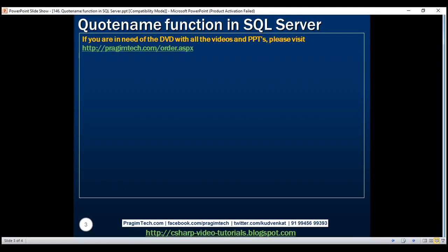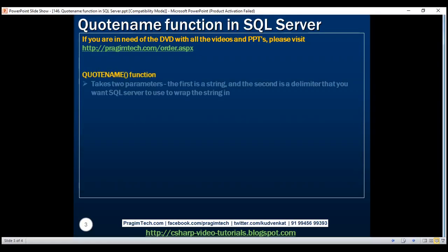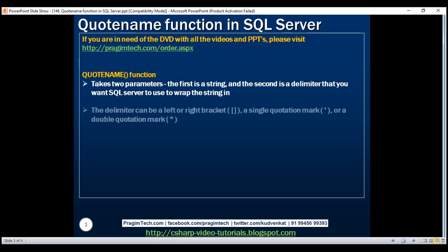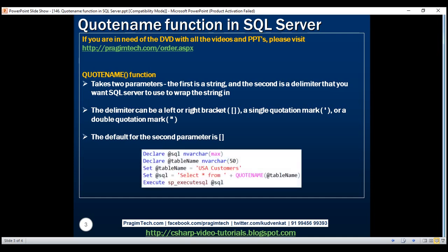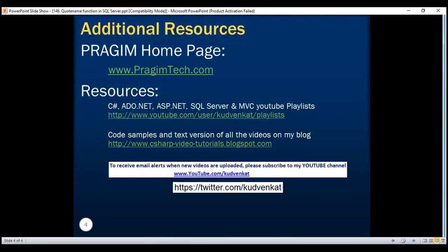The QUOTENAME function takes two parameters: the first is a string, and the second is a delimiter that you want SQL Server to use to wrap the string in. The delimiter can be a left or right bracket, a single quotation mark, or a double quotation mark. The default for the second parameter is a square bracket. Thank you for listening and have a great day.